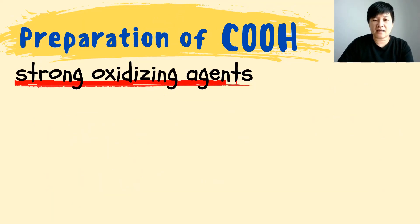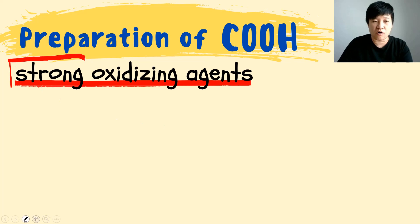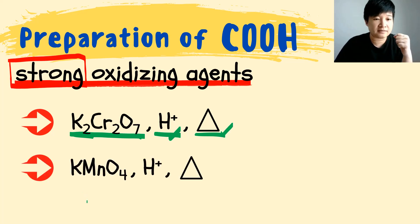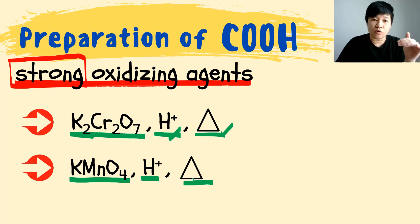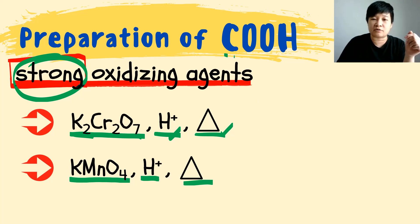Let's look at what oxidizing agents you can use in this preparation of carboxylic acid, where you will oxidize your primary alcohol and also your aldehyde. Looking at the strong oxidizing agents in your syllabus, we have learned two. The first is potassium dichromate in acidified condition with heat: K2Cr2O7, H+, heat. The second strong oxidizing agent is potassium permanganate: KMnO4, H+, heat. These are the two strong oxidizing agents we will use in this video to prepare carboxylic acid.